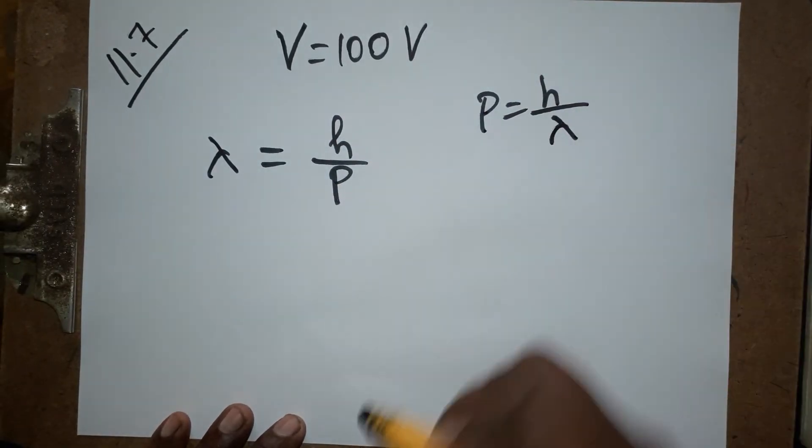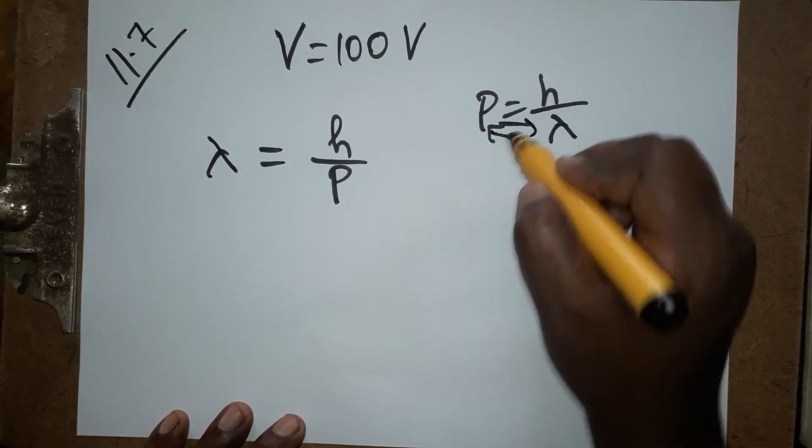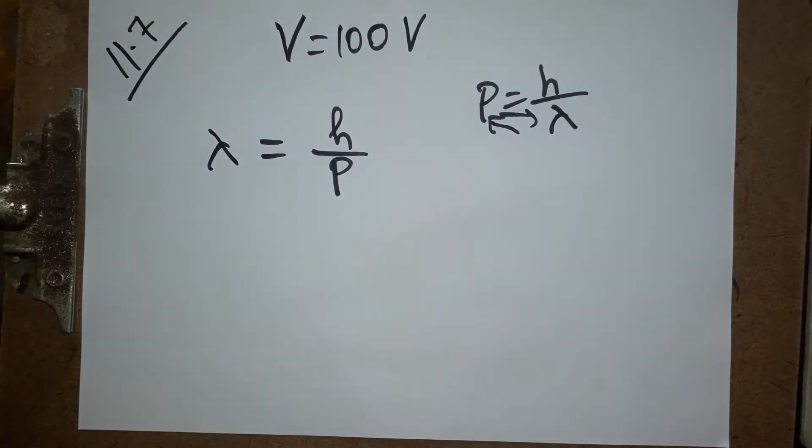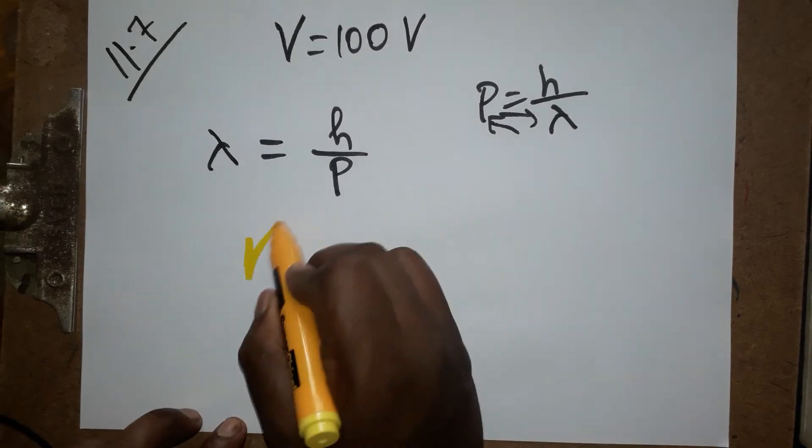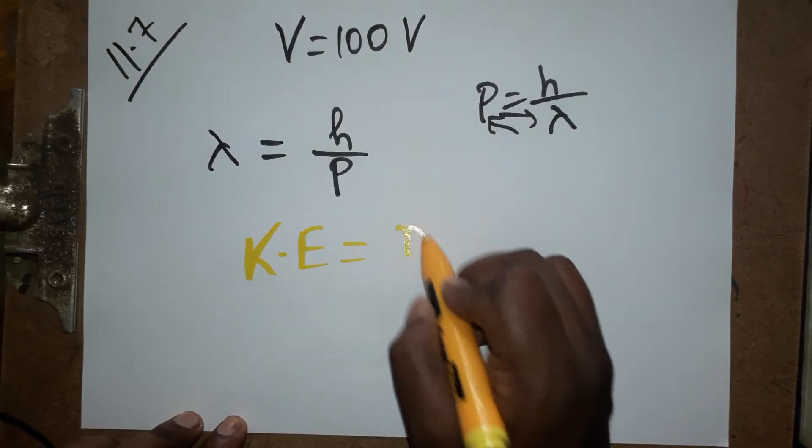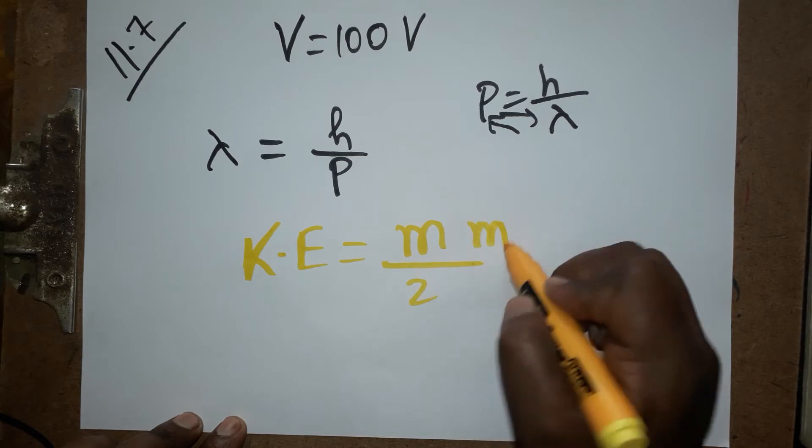Lambda is equal to h divided by momentum through cross multiplication. Now what is momentum? In the kinetic energy, I know kinetic energy is equal to m v square.